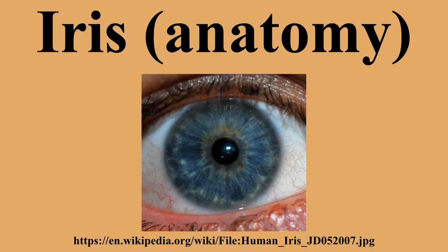The stroma connects to a sphincter muscle, which contracts the pupil in a circular motion, and a set of dilator muscles which pull the iris radially to enlarge the pupil, pulling it in folds. The back surface is covered by a heavily pigmented epithelial layer that is two cells thick, but the front surface has no epithelium.